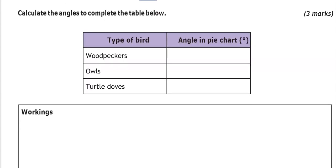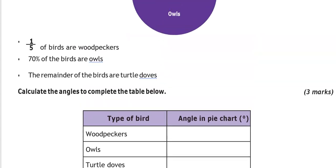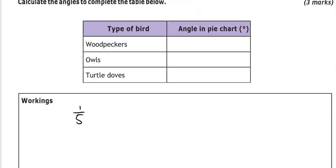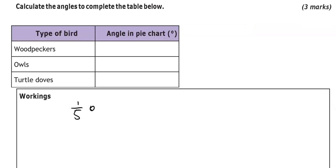So we're going to work out 1/5 first. We know that there are 360 degrees in total in the circle. So we're going to work out 1/5 of 360. So we'll divide 360 by 5. How many 5s would fit into 36? That would be 7 of them. 7 × 5 is 35, so there is 1 remaining. How many 5s into 10? That is 2. So woodpeckers, that is 72 degrees.